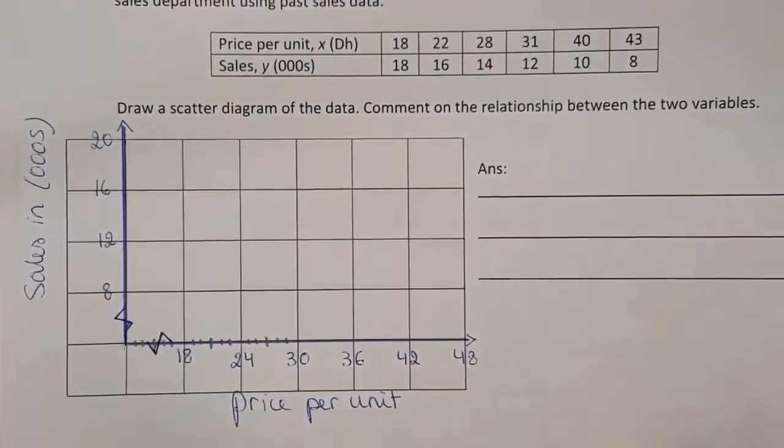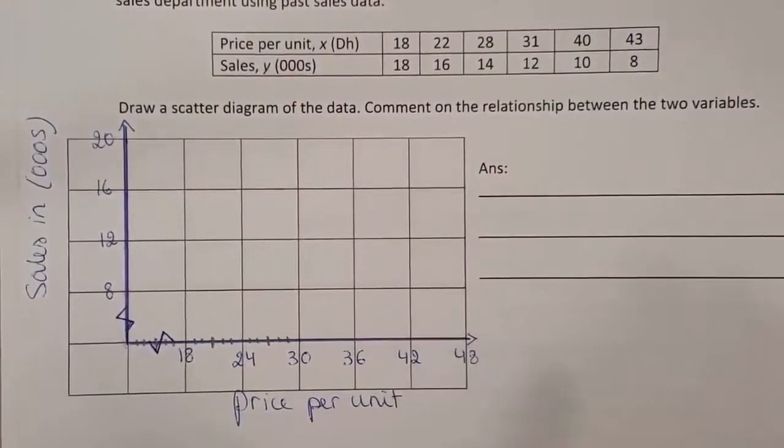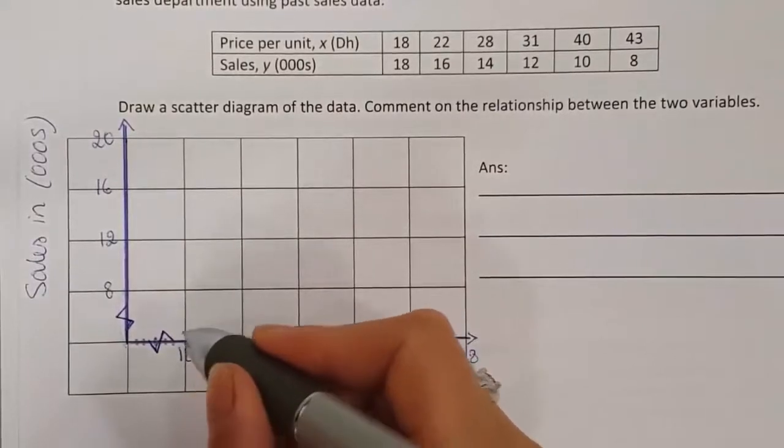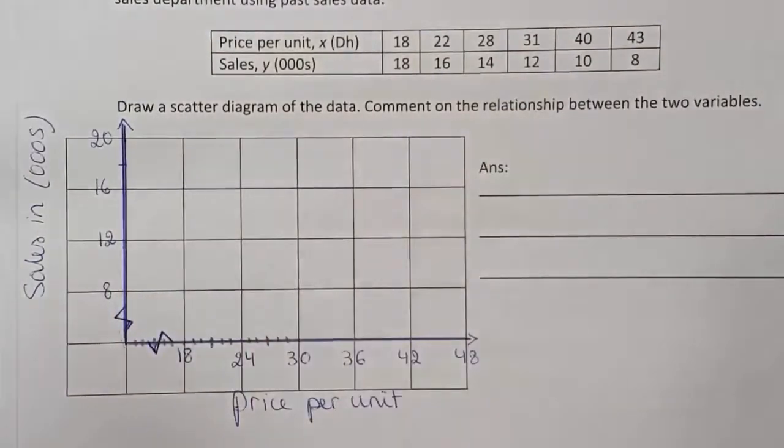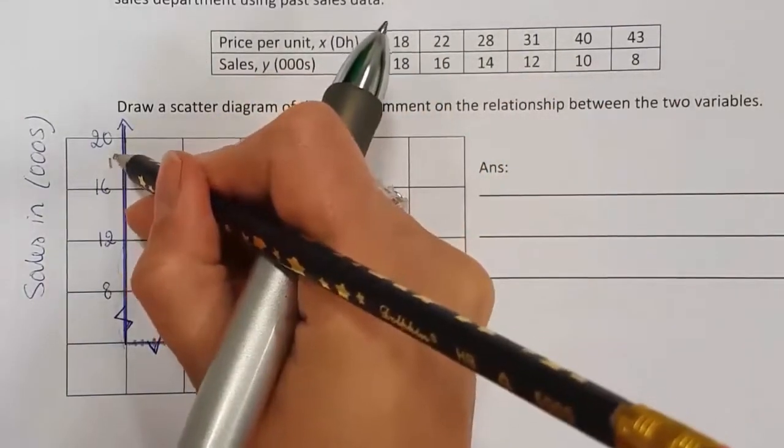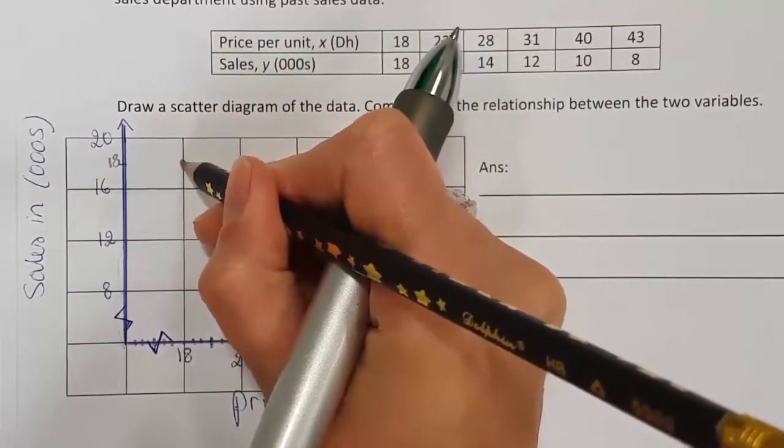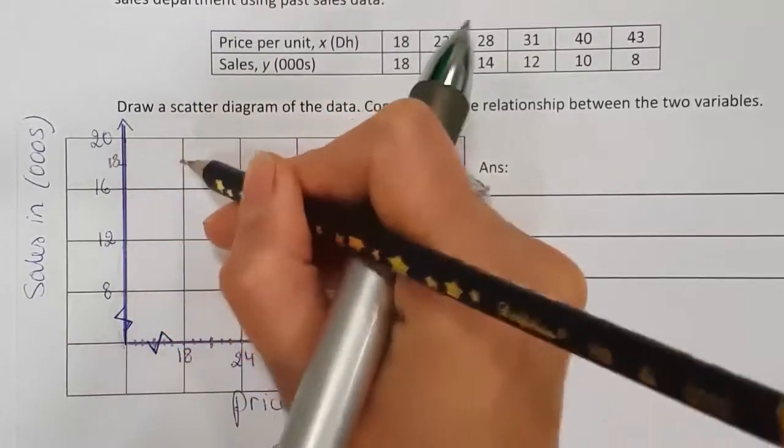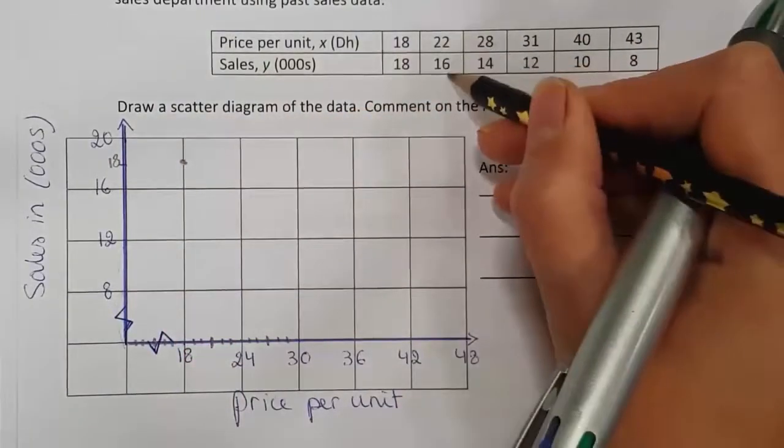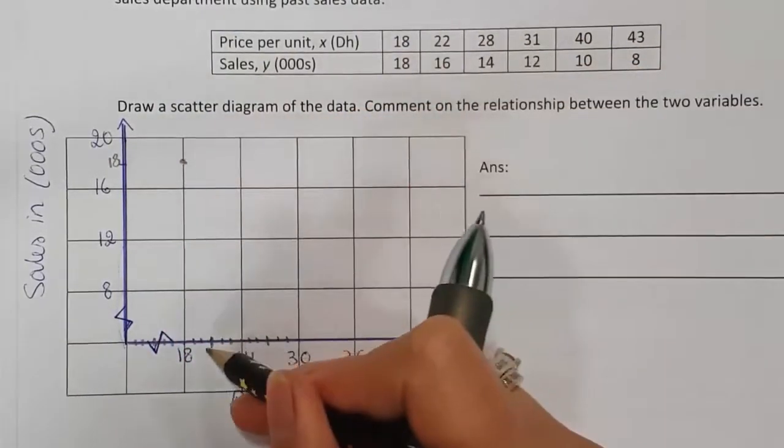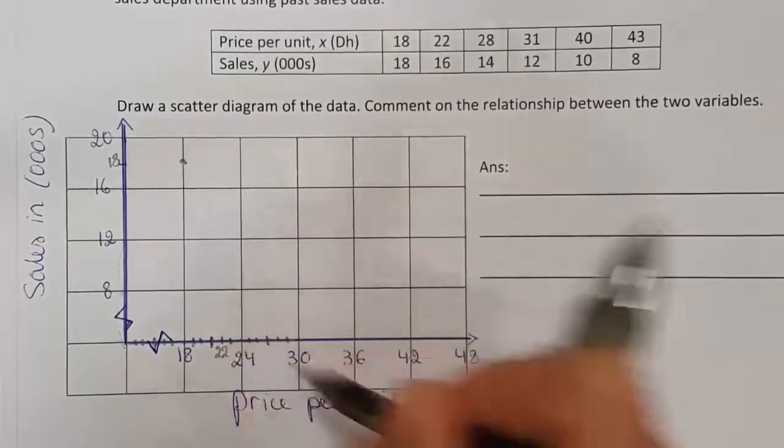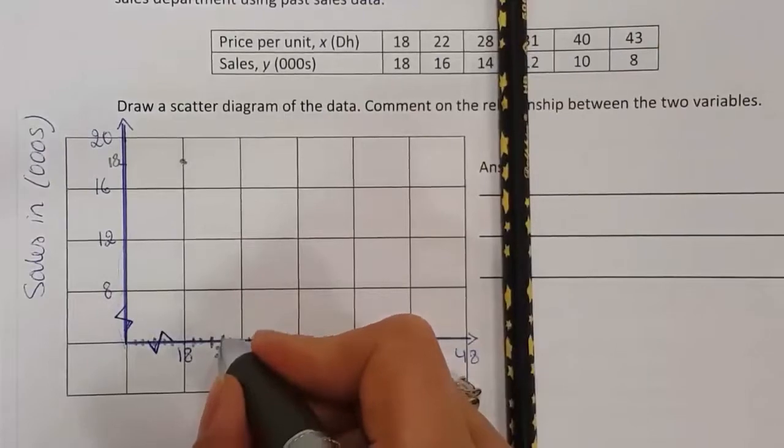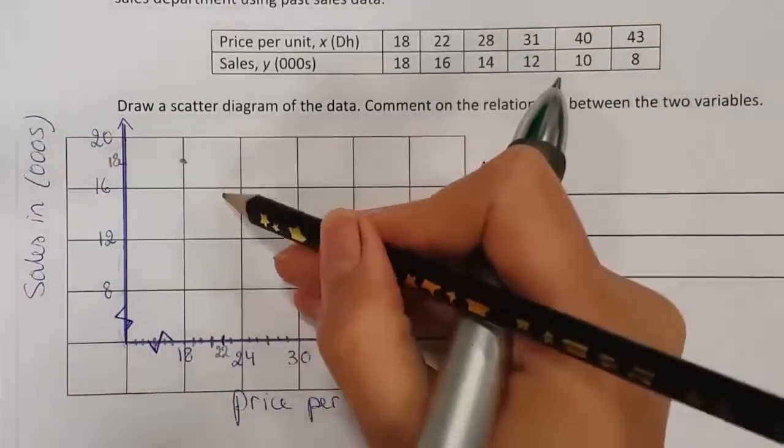Now let's graph our data as accurately as we can. 18 is with 18, this is 16. So right here you will find 18 with 16, right in between 16 and 20. Then 22 with 16. This is 18, 19, 20, 21, 22. 22 with 16.